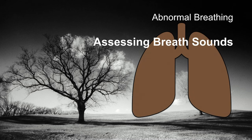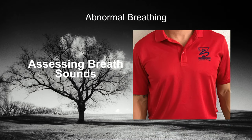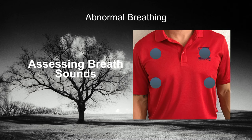When assessing breath sounds, we look at somebody's chest typically in four spots — right upper and left upper, comparing the two, then right lower and left lower. This gives us a comparison of what the upper lungs sound like versus the lower lungs. In EMS we generally hit about four to six spots. We want to compare left versus right and upper versus lower because different conditions may be in just one lung or may affect just the upper or lower lungs.